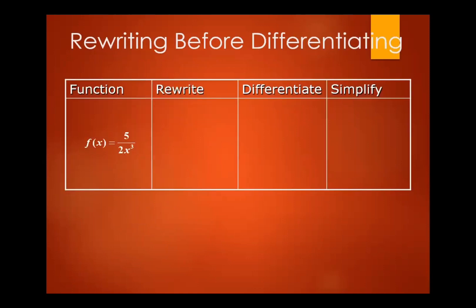Rewriting before differentiating: F of X equals 5 over 2X cubed. Rewrite by transferring from the denominator to the numerator: 5 halves times X to the power negative 3. Differentiate: negative 3 times 5 halves gives X to the power negative 4. Simplifying, F prime of X equals negative 15 over 2X to the power 4.